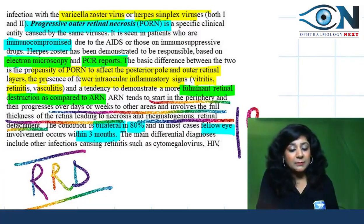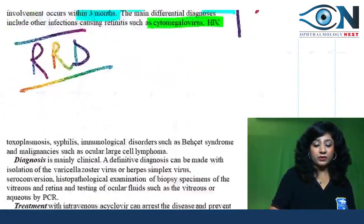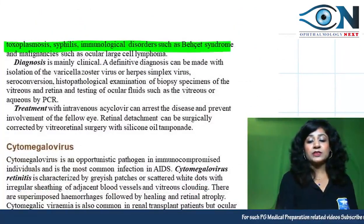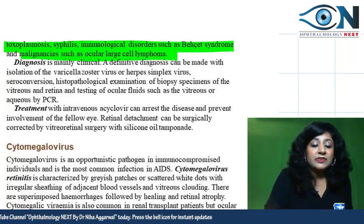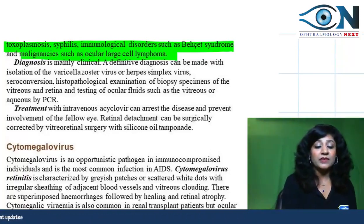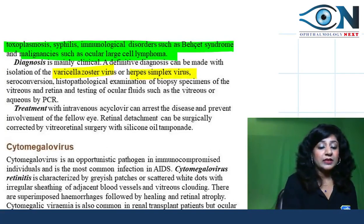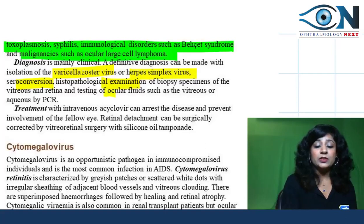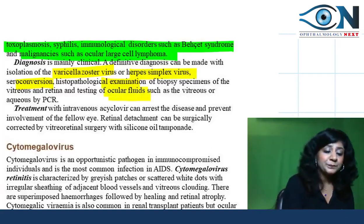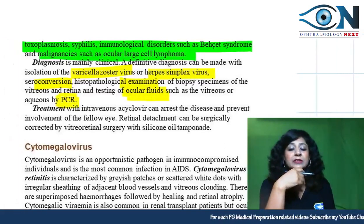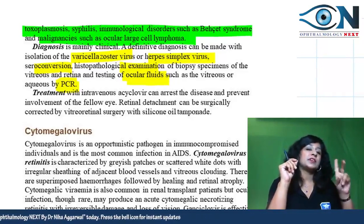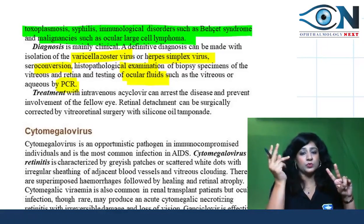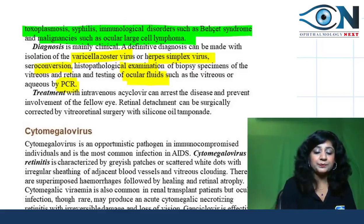The main differential diagnoses for ARN include CMV, HIV, toxoplasmosis, syphilis, immunological disorders like Behçet syndrome, and malignancies like ocular large cell lymphoma. Definitive diagnosis requires isolation of varicella zoster or herpes simplex virus, serology titer conversion, histopathological examination of biopsies, or PCR testing of ocular fluids — aqueous or vitreous. Treatment includes intravenous acyclovir to arrest retinal detachment, and surgical therapy.